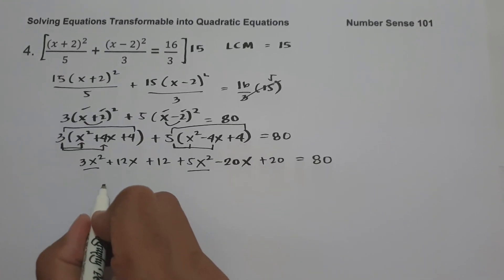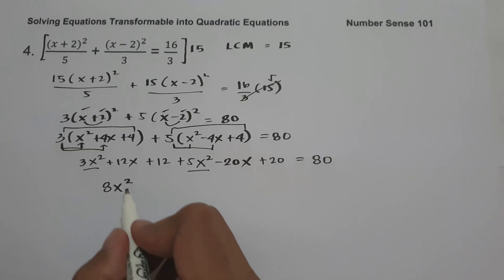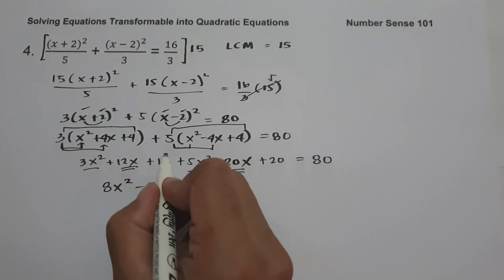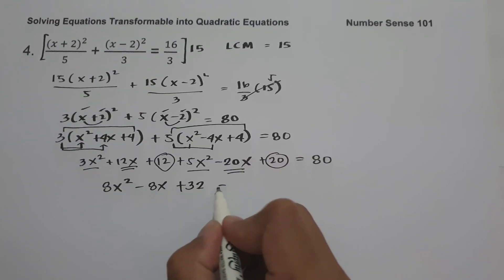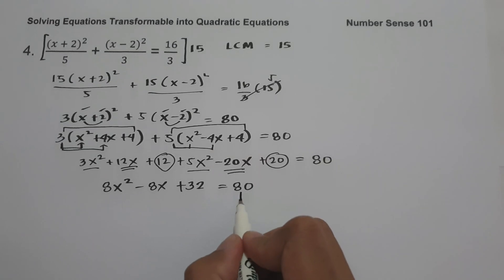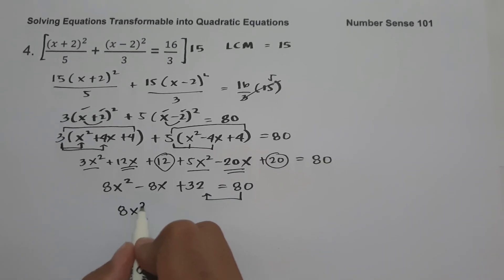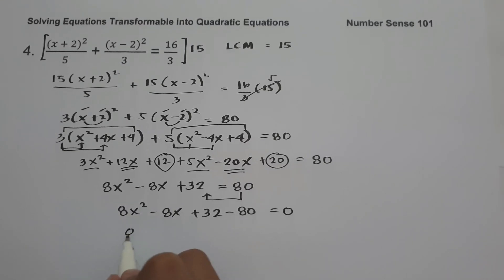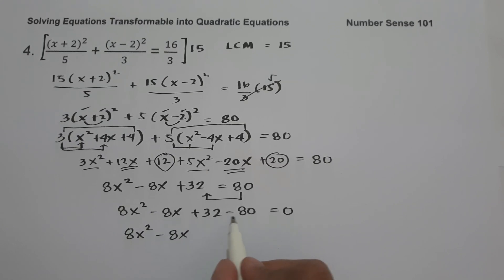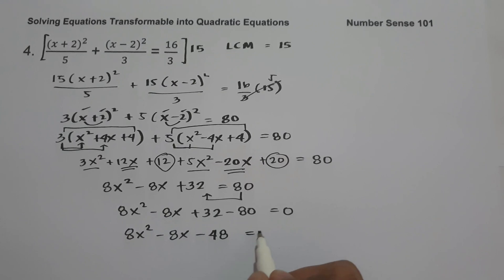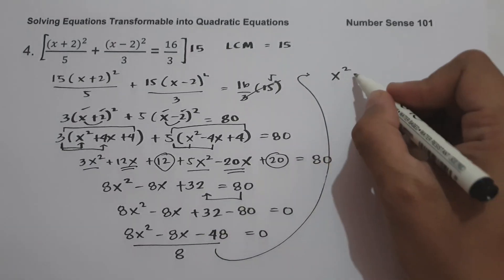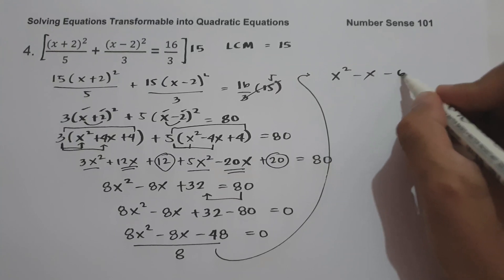Combining like terms: 3x squared plus 5x squared is 8x squared; 12x minus 20x is negative 8x; and 12 plus 20 is 32, equals 80. Moving 80 to the other side gives 8x squared minus 8x plus 32 minus 80 equals 0, which is 8x squared minus 8x minus 48 equals 0. Dividing by 8 gives x squared minus x minus 6 equals 0.